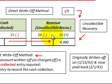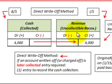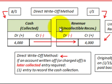So here we've looked at both the allowance method and the direct write-off method for the collection of an account that was previously written off.